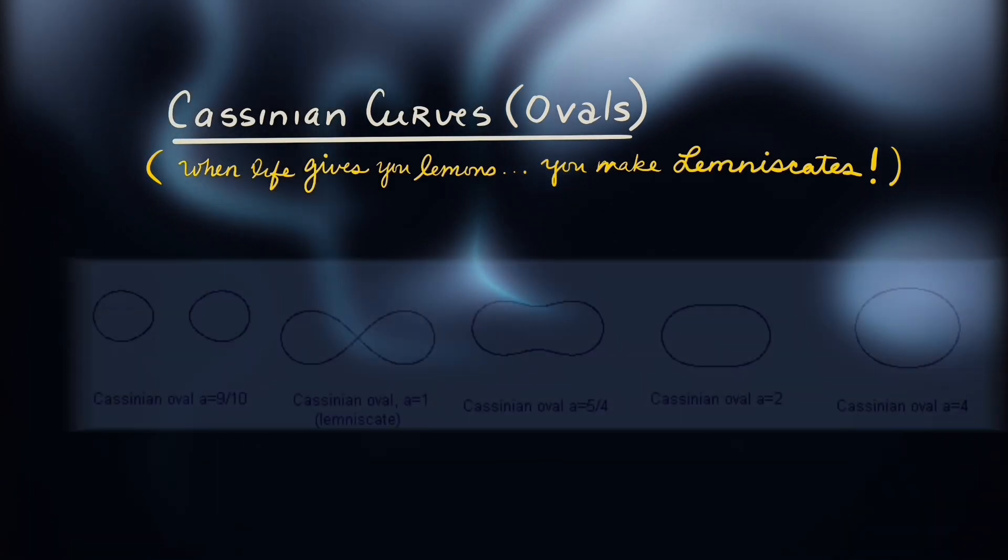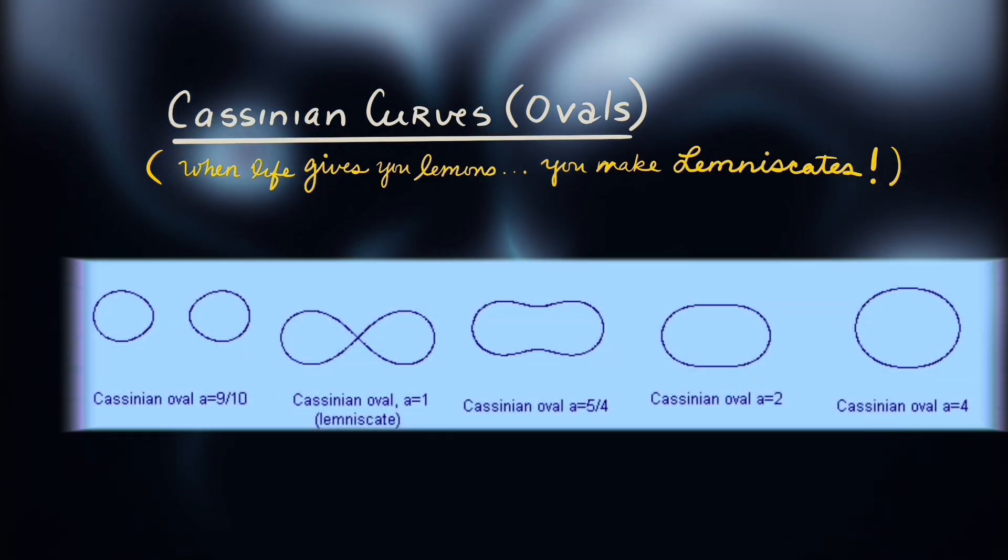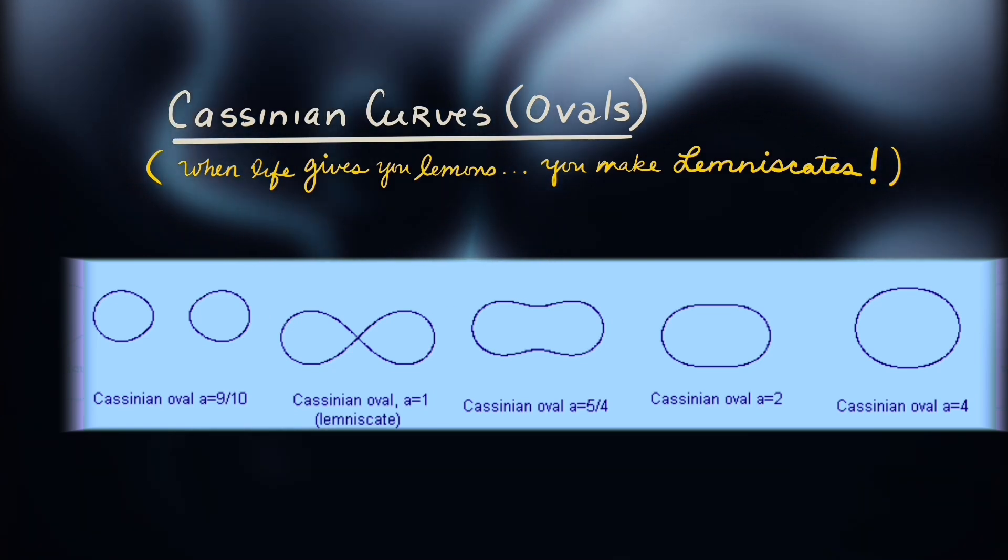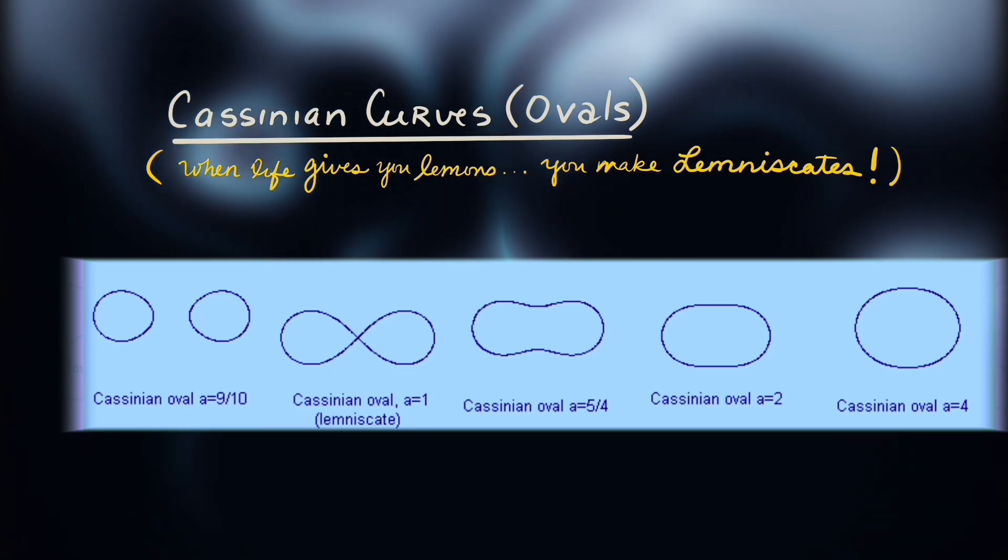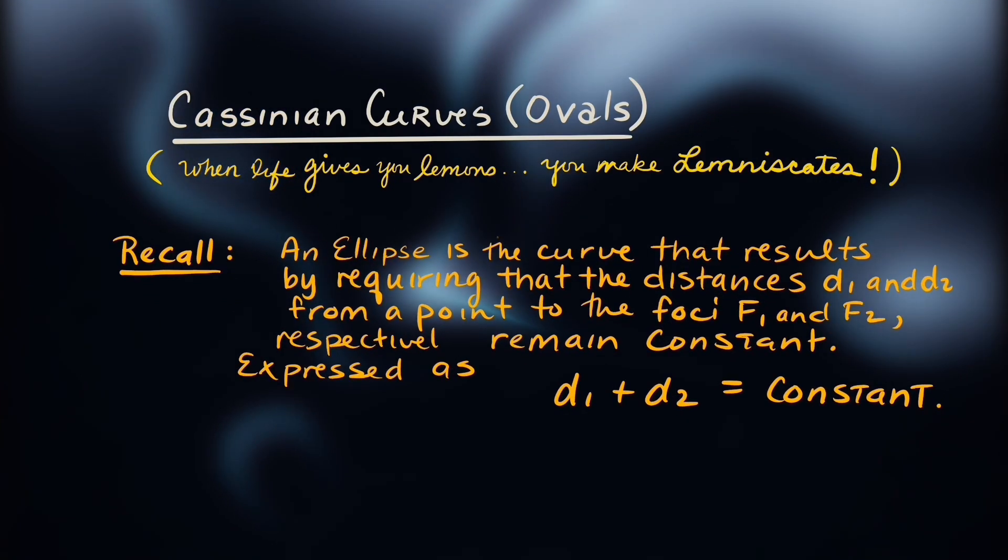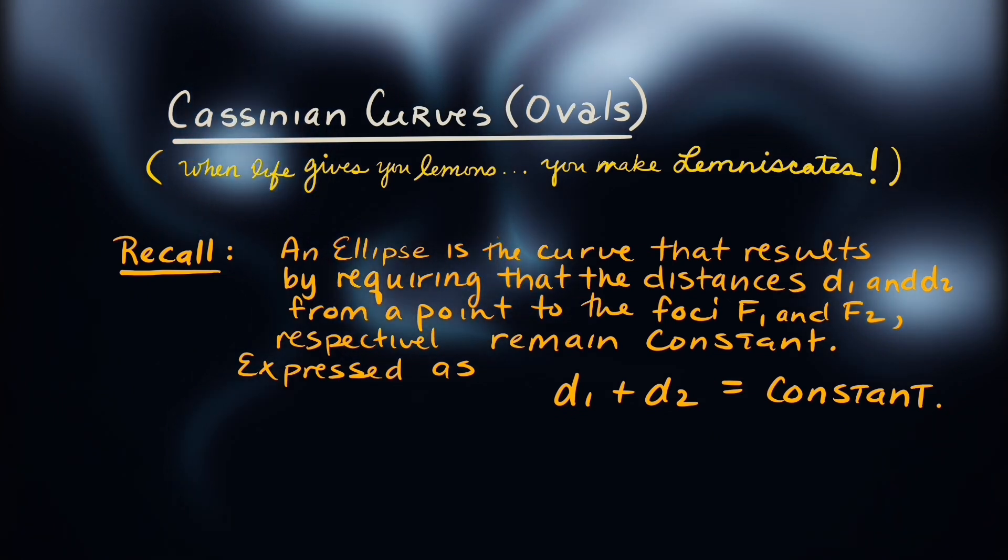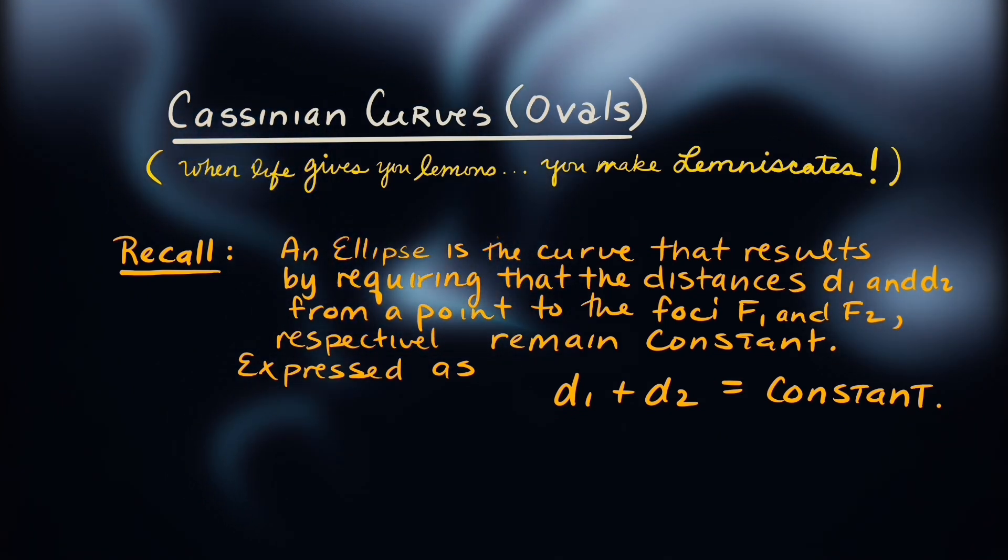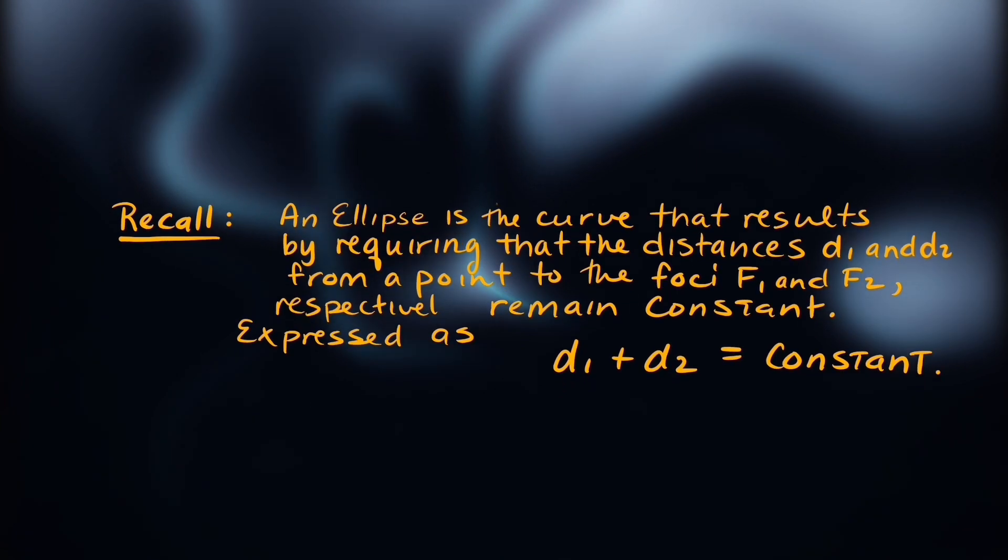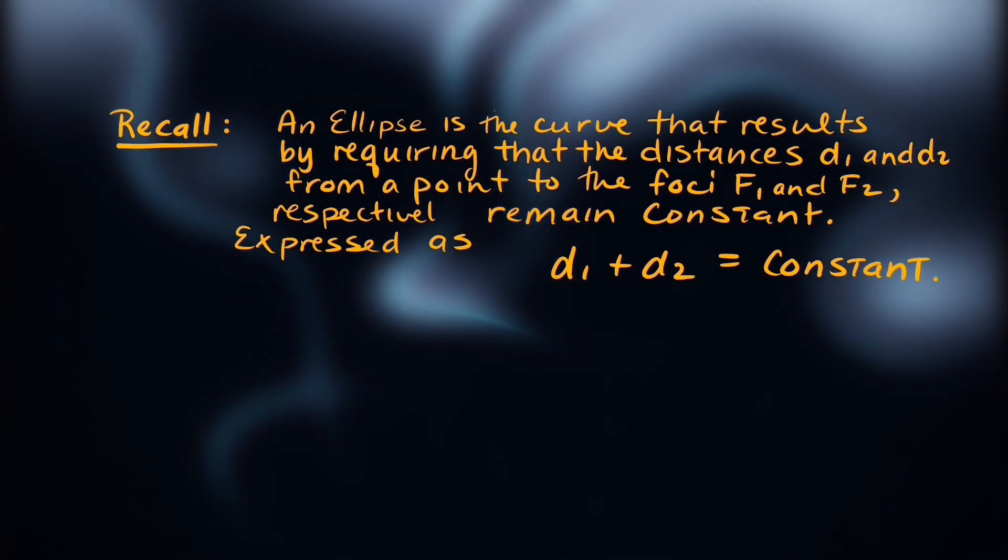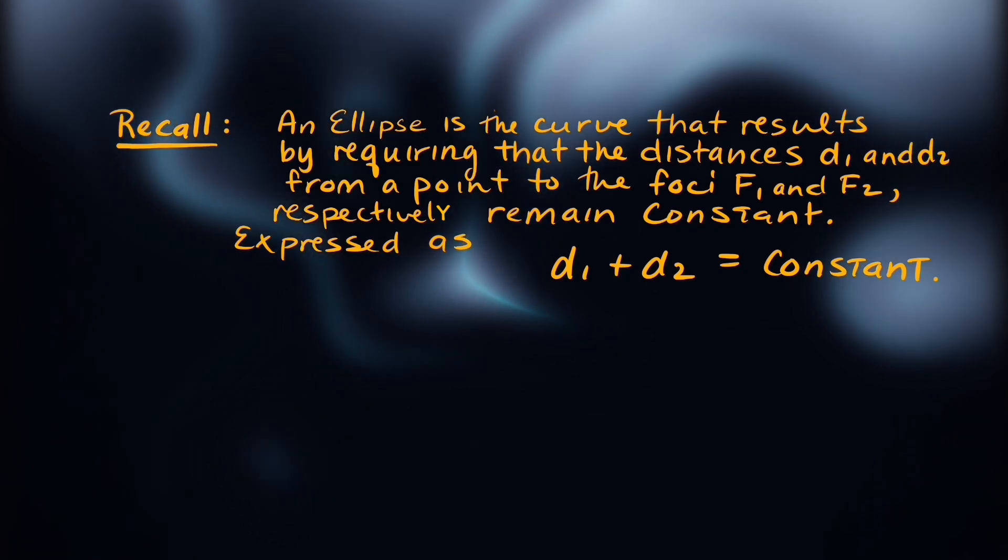The geocentric enthusiast Giovanni Cassini studied Cassinian curves or Cassinian ovals in his exploration to describe the orbits of planets. Recall that an ellipse is the curve that results when requiring that the distances d_1 and d_2 from a focal point F_1 and F_2 to a point on the ellipse is always going to be constant. d_1 plus d_2 is always constant.